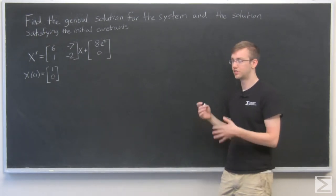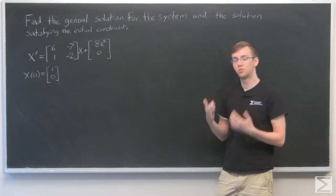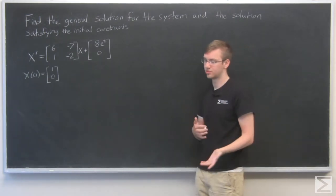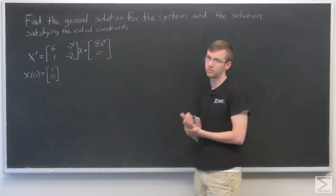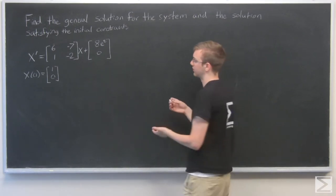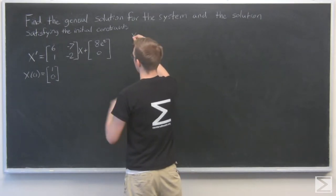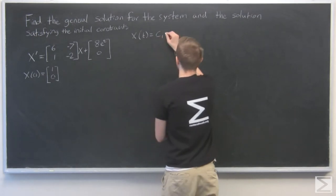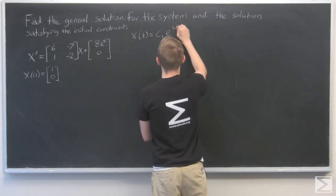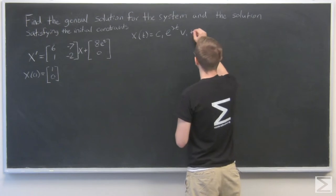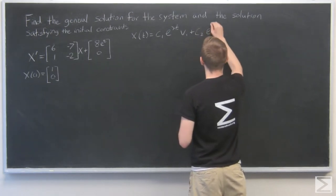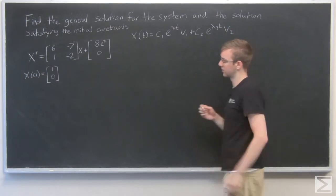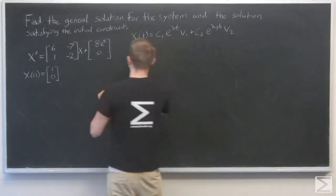We know that we need to find the homogeneous solution and the particular solution. We'll start with the homogeneous solution, which we get through the eigenvalues. We find the eigenvalues of this matrix, and we'll get a general solution that'll look like C1*e^(lambda_1*t)*v1 plus C2*e^(lambda_2*t)*v2. So we need to go about getting these eigenvalues.